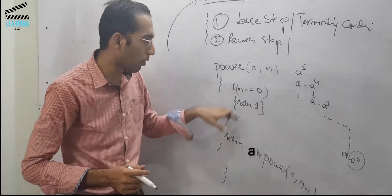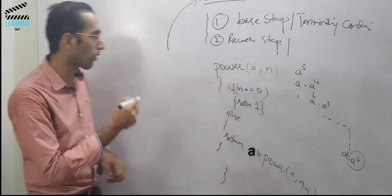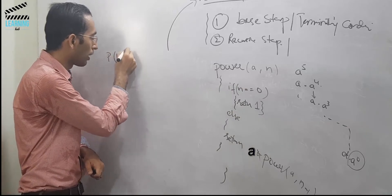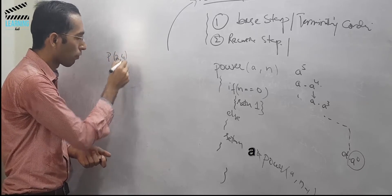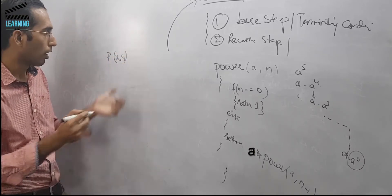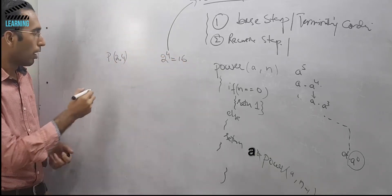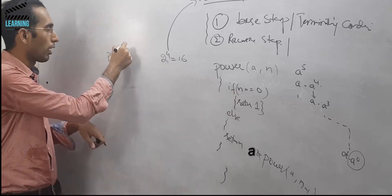This function will keep calling itself until it reaches 0. Let's solve this. We'll solve P of 2, 4. We'll solve for 2 to the power 4, that is 16. First we called the function, n is equal to 0? No, it was 4, not zero.